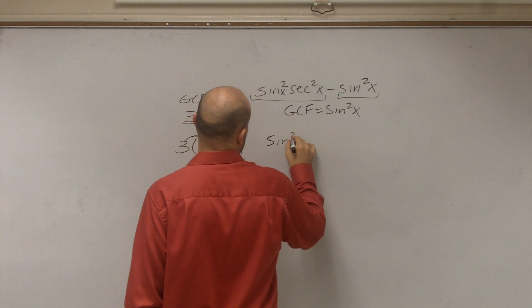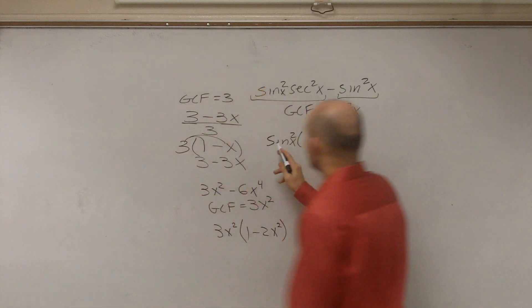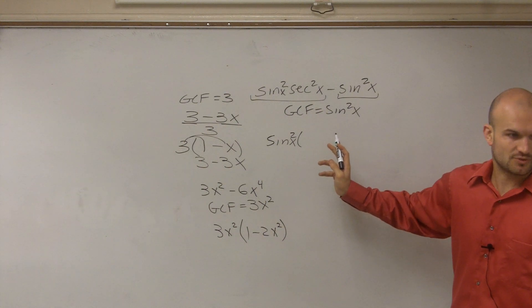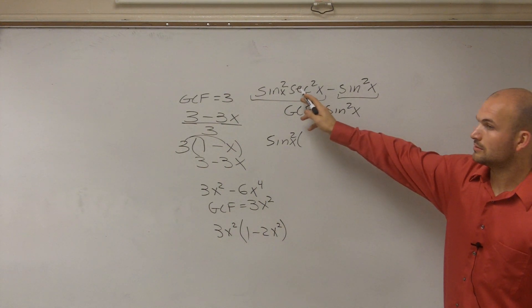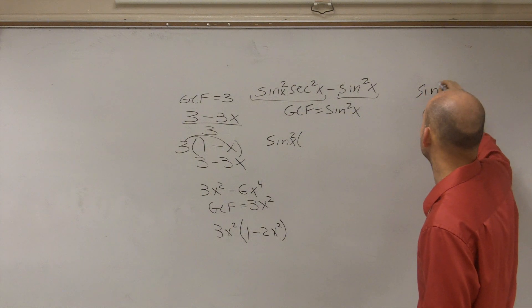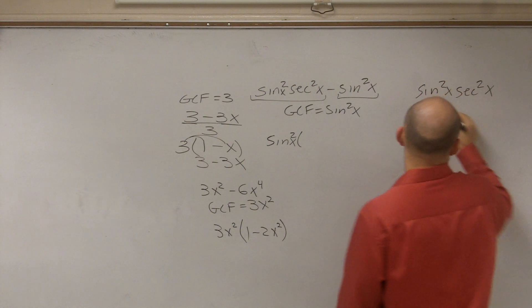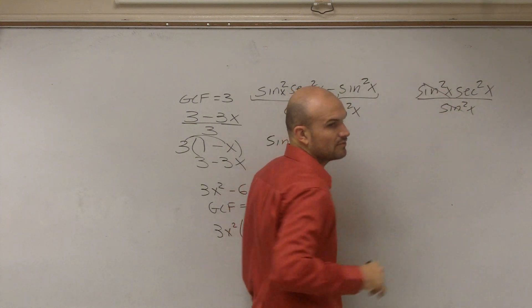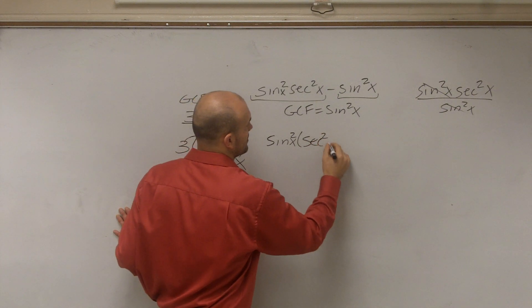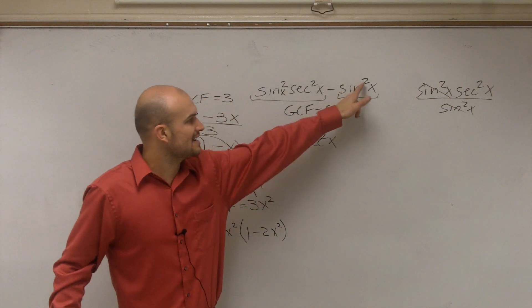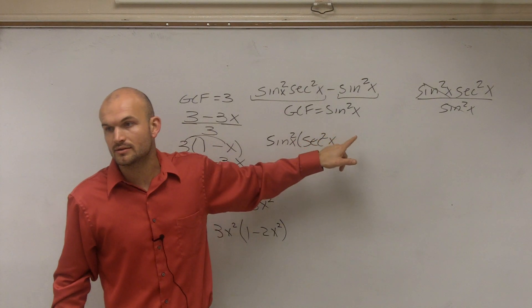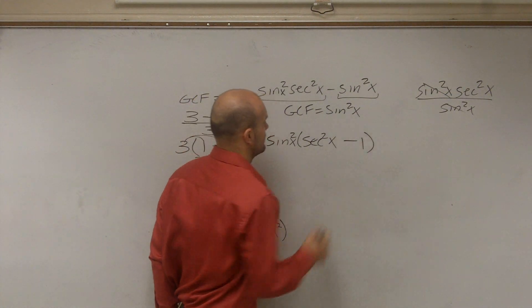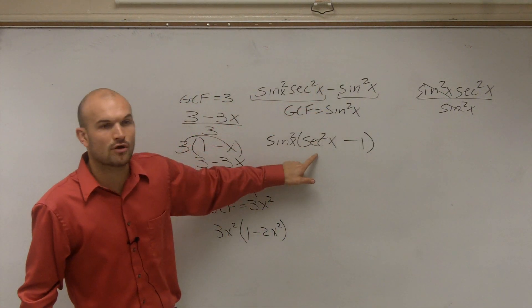So the sine squared of x times secant squared of x divided by sine squared of x is going to leave us with secant squared of x. When we divide by sine squared of x, this leaves us with secant squared of x. If you divide sine squared of x by sine squared of x, isn't that just 1? Yeah. But you're multiplying it by sine squared of x. These divide out to 1. So you're just left with secant squared of x. Then what's negative sine squared divided by sine squared? Negative 1.